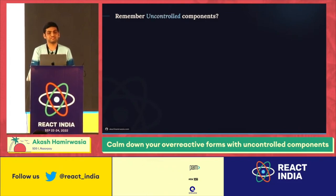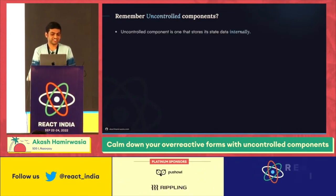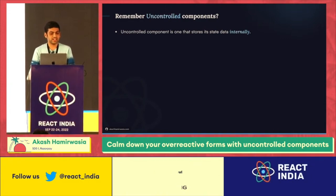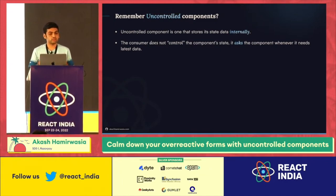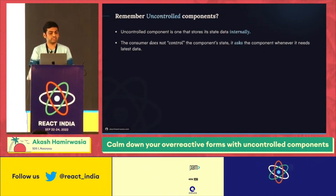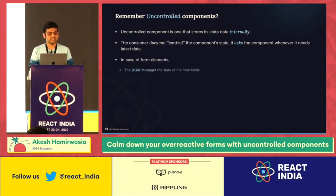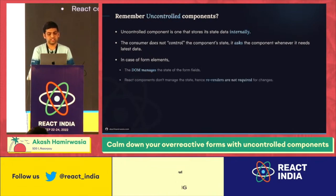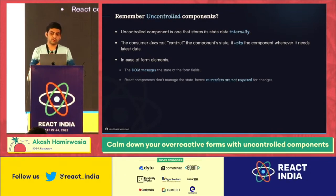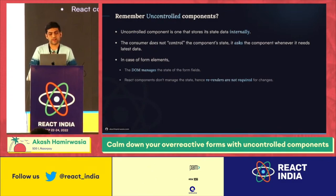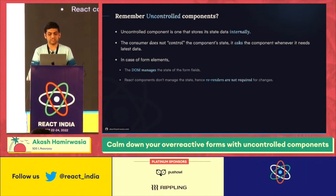How many of you remember or even use uncontrolled components in your day-to-day stuff? A quick refresher: an uncontrolled component is one that stores its state data internally, and the parent of the component does not really control the component state — it asks the component whenever it needs the latest data. In case of form elements, the DOM manages the state of the form fields. That is why React components do not have to manage the state, and hence re-renders are not required for reflecting the changes, because the DOM is already optimized to do these things.